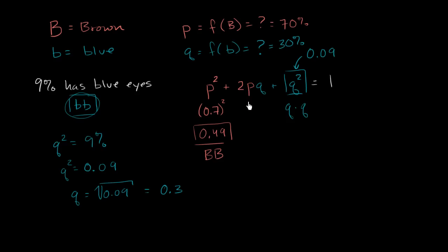And then we can figure out this right over here. 2 times P times Q - that's going to be 2 times 0.7 times 0.3. So that's going to be 2 times 0.21. This right over here is going to be 0.42.